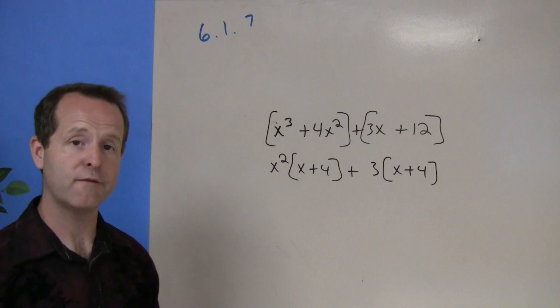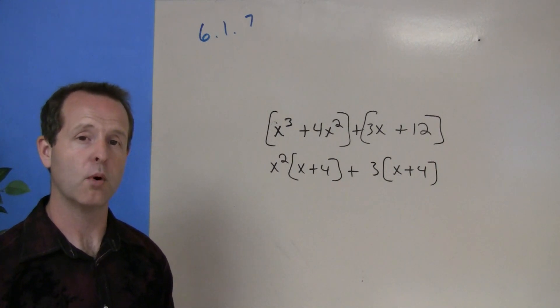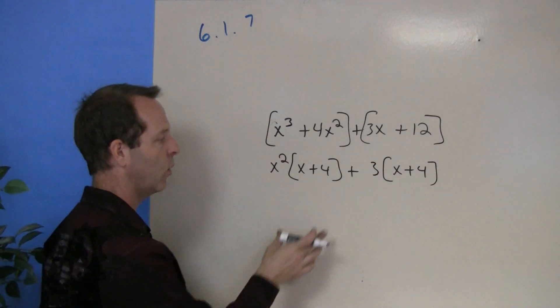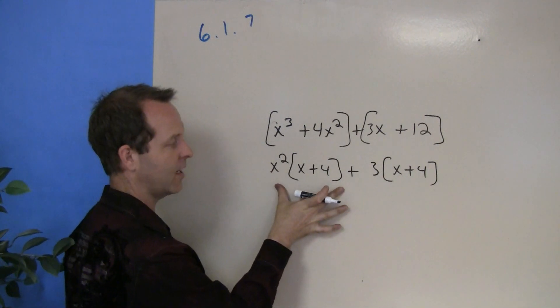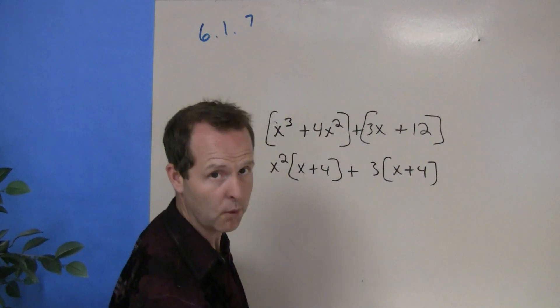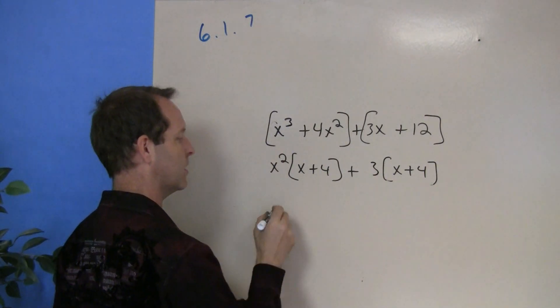Notice how an x plus a 4 in this particular case was left in both cases, in both sides. Well now what I can do is think of this as two terms. This first section and this second section. Do you see what's common in both of those sections? The x plus a 4.